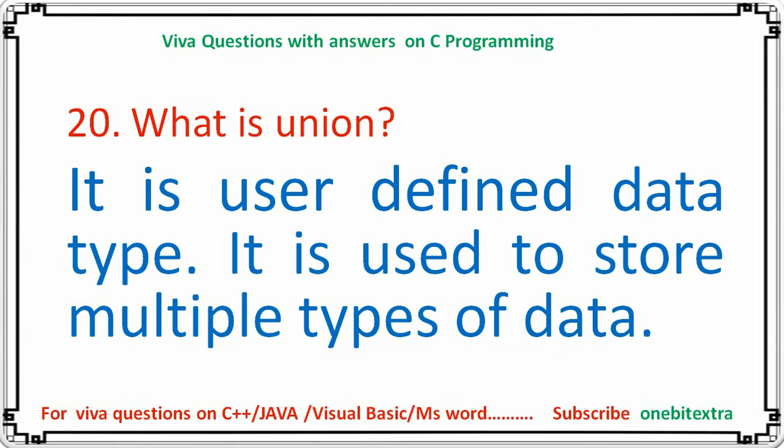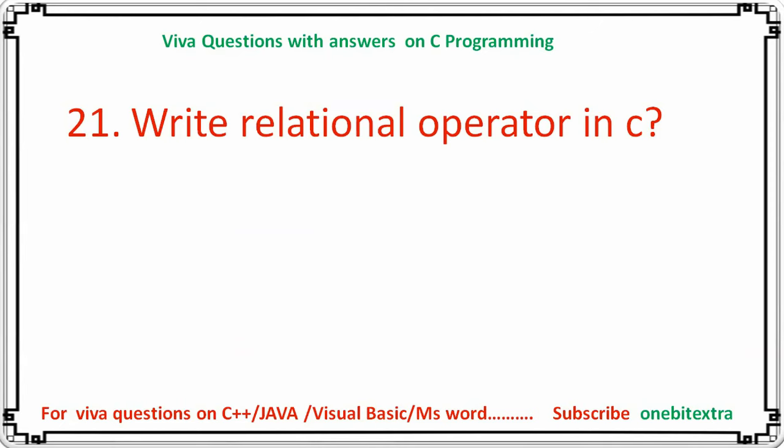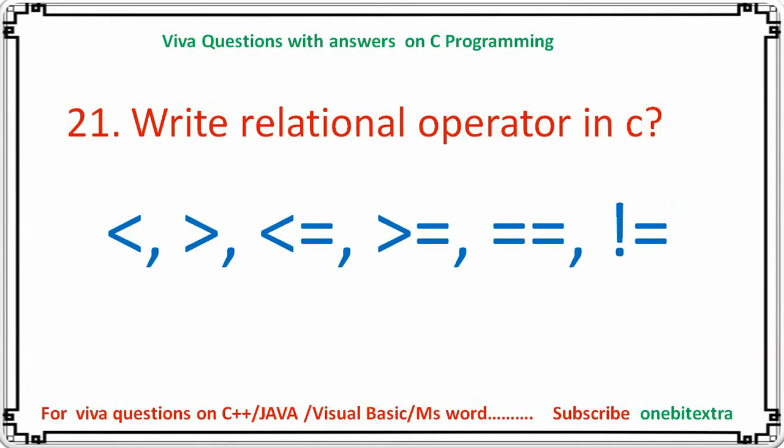Next question: write the relational operators in C. The answer is: less than (<), greater than (>), less than or equal to (<=), greater than or equal to (>=), equal to (==), and not equal to (!=). These are used to make comparisons.